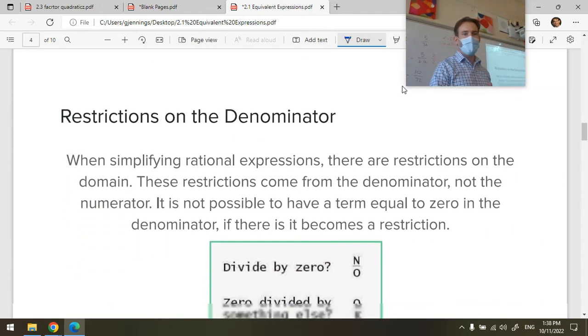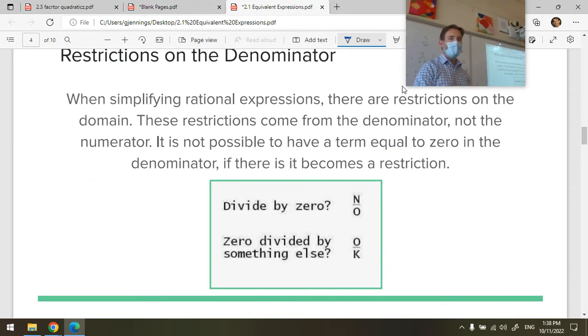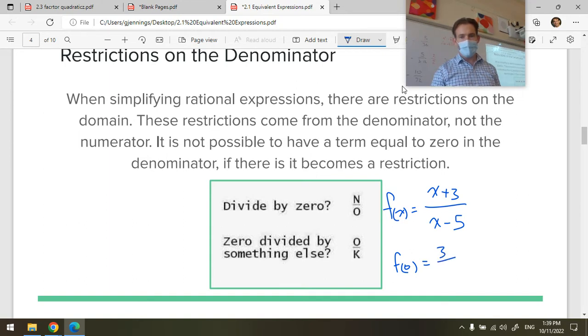But before we continue, we want to think about what our restrictions on the denominator might be. For example, if I have x plus 3 being divided by x minus 5, this is fine for any value of x except for one value. I am not allowed to use x equals what value here? x is 0 is okay. If I look at f at 0, that would be 0 plus 3 is 3 over 0 minus 5 is minus 5. So negative 3 fifths is a valid answer.